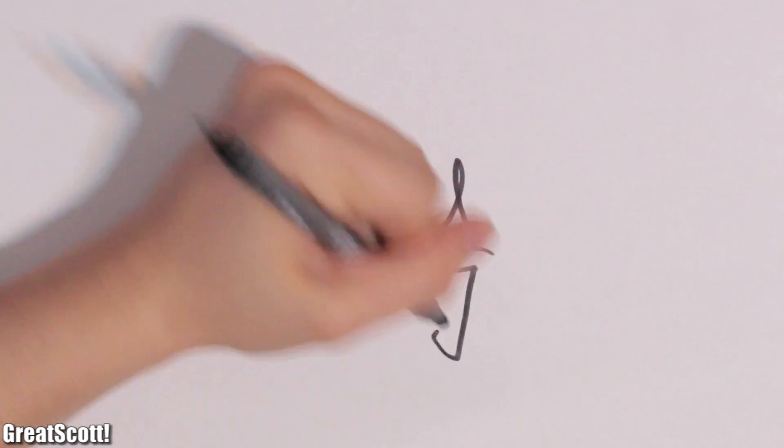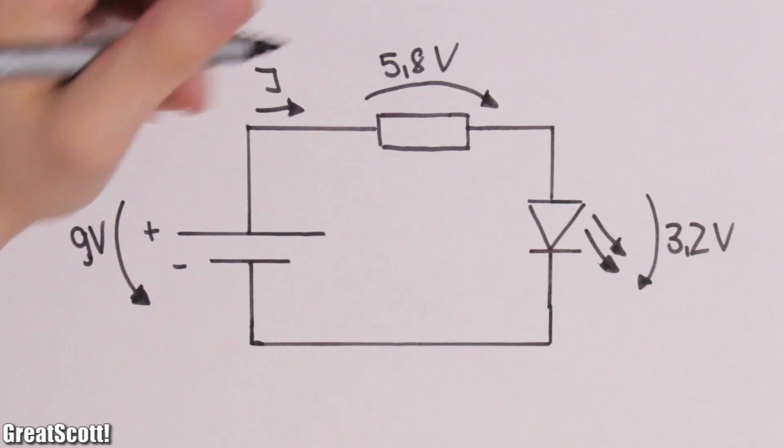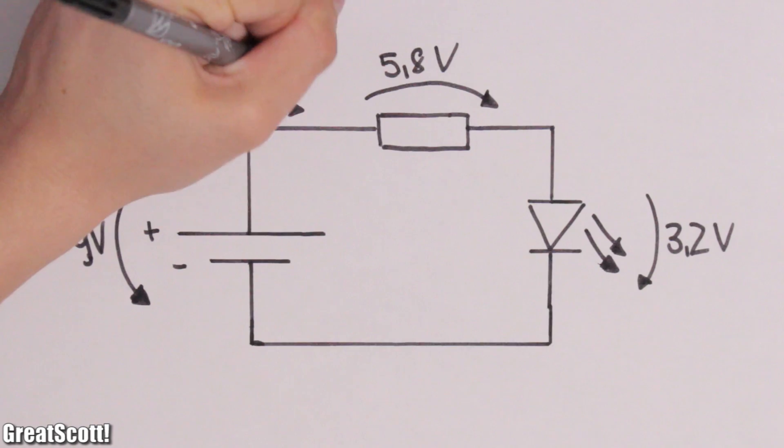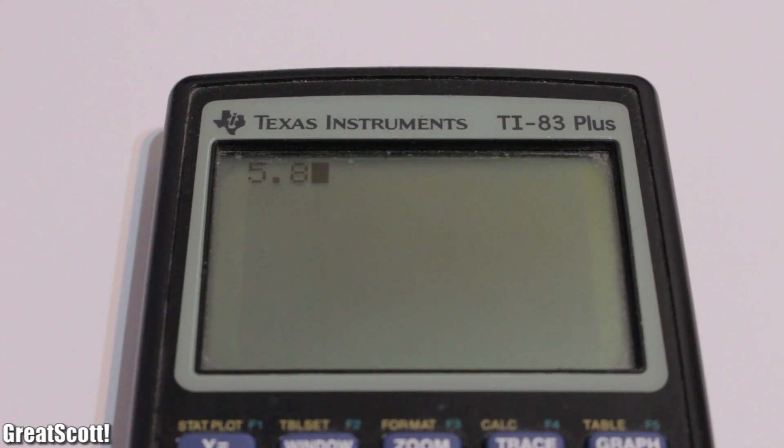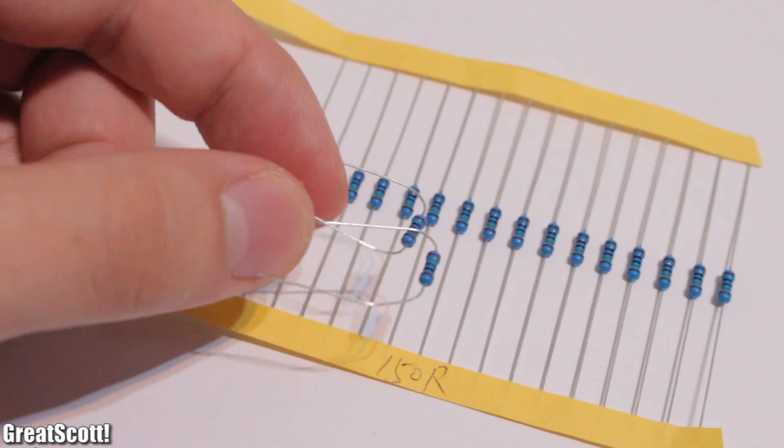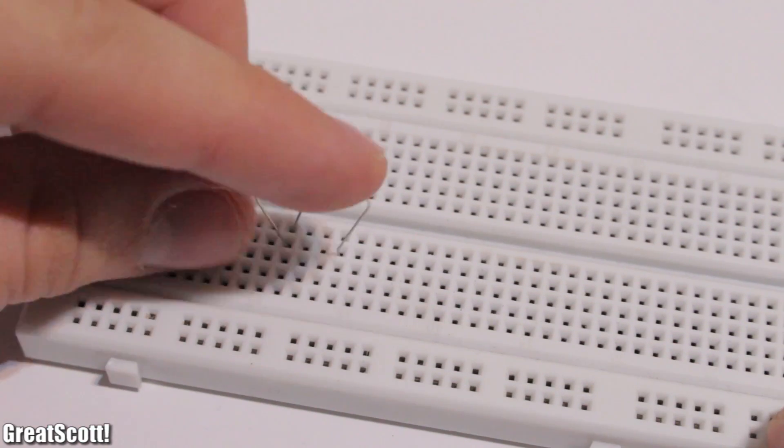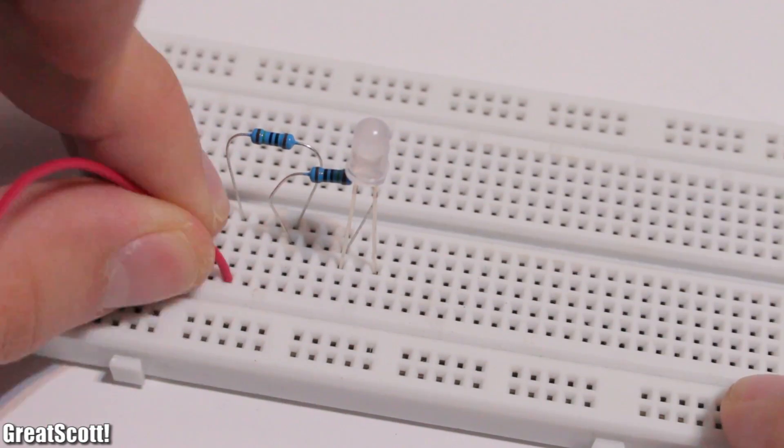Resistance equals voltage divided by current, and since the LED and resistor are connected in series, the 20 milliamps will also flow through the resistor. So 5.8 volts divided by 0.02 amps equals 290 ohms. Two of those 150 ohm resistors in series will work fine. When you don't have the correct value, then use a bigger one like I did with 300 ohm.